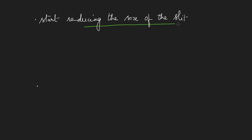We observe that the light spreads. It extends to the area of geometrical shadow and I obtain a pattern like this.